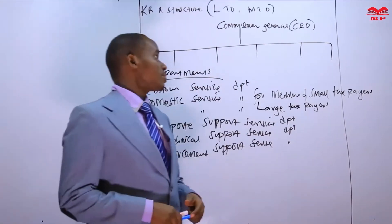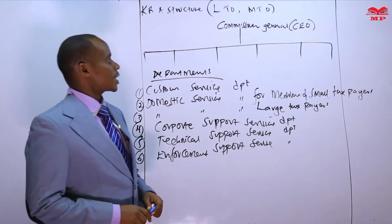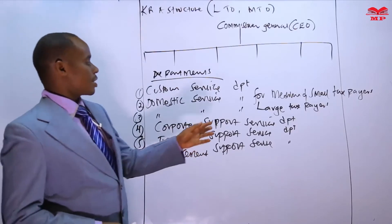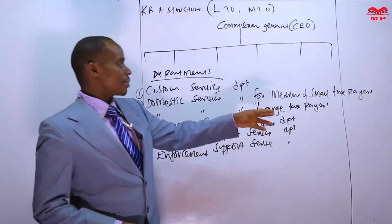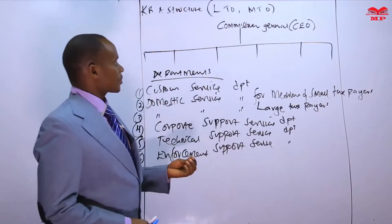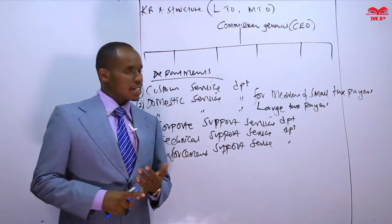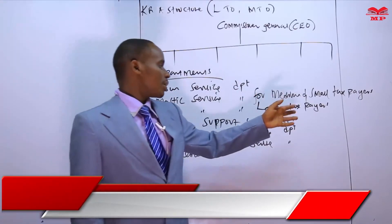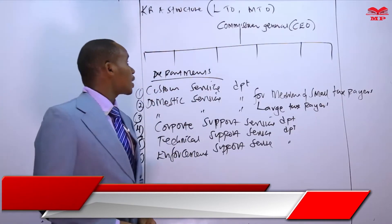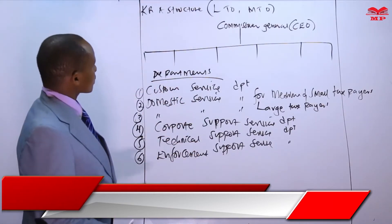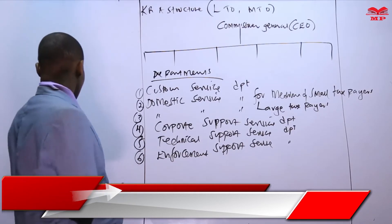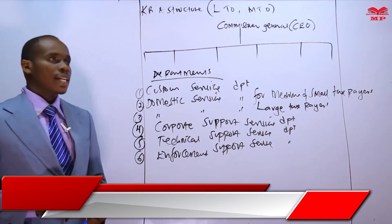MTO simply means Medium Taxpayer Office. MTO is also an office established to deal with income tax and VAT matters affecting small and medium taxpayers. That marks the end of the KRA structures, LTO, and MTO. We will now move to the next part, which is the development of tax policy.